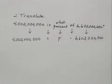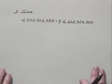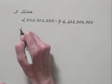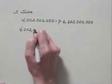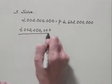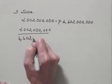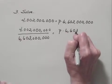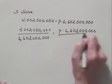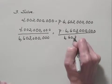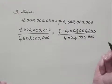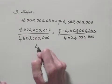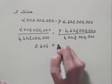So we've translated to this equation, and now we need to solve it. It's the third step in our process. We can get P alone on the right-hand side if we divide both sides by this number that's multiplied times P. So we'll have 4,002,000,000 divided by 6,603,000,000 is equal to P times 6,603,000,000 divided by 6,603,000,000, and on the left-hand side when I do the division and round to three decimal places, I get 0.606, and this is approximately equal to P.